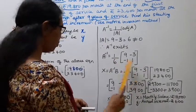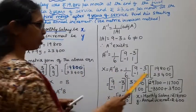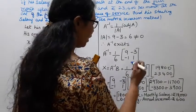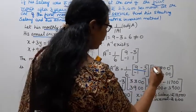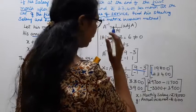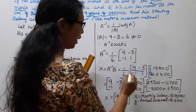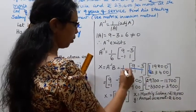Now X equals A inverse times B. A inverse we have, B value is 19,800, 23,400. Multiply: A inverse times B equals 1 by 6.